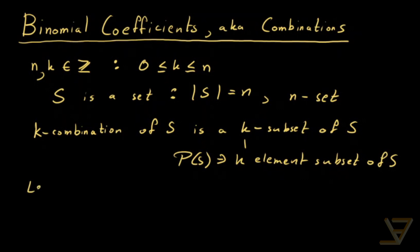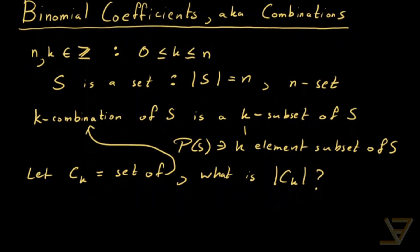Now the question is, if we let C_k equal to the set of these k-combinations, what is the cardinality of C_k? So what is the number of subsets of S that have k elements? And this is a pretty natural question to ask.